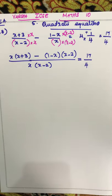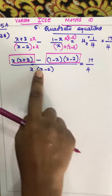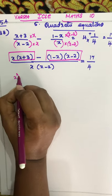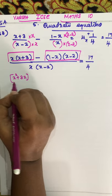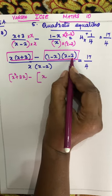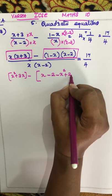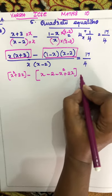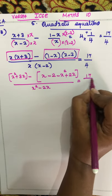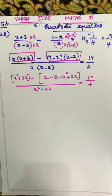First you have to multiply. You can make a mistake here, so do it carefully. So: x into x is x squared plus 3x. See how you multiply: 1 into x is x, 1 into minus 2 is minus 2, minus x into minus x is minus x squared, minus x into minus 2 gives plus 2x. This simplifies to x squared minus 2x, equal to 17 by 4.